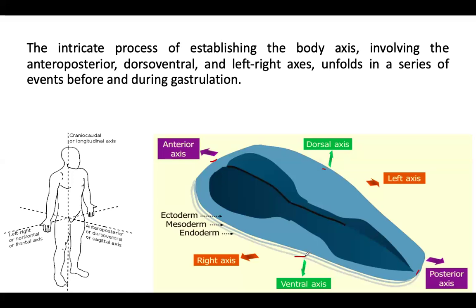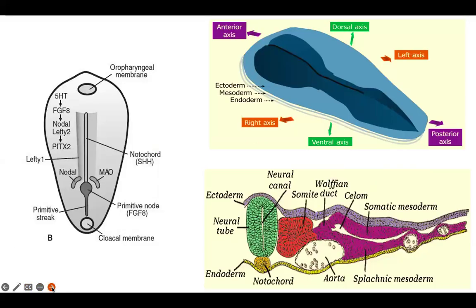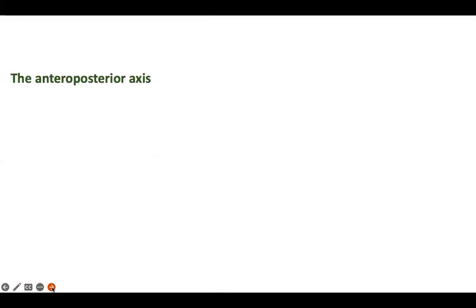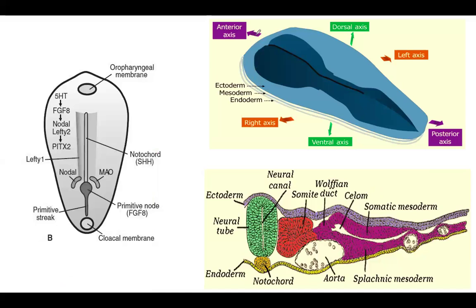And dorsal-ventral and left-right axis, meaning from the left hand side to the right hand side. The embryo develops in these three axes. The antero-posterior axis runs from the anterior portion to the back, posterior.